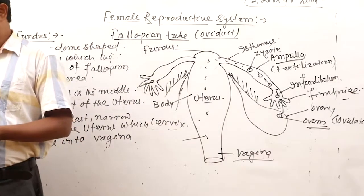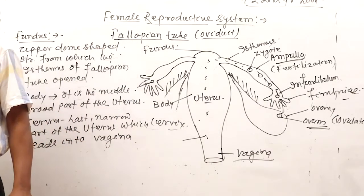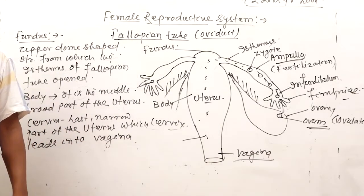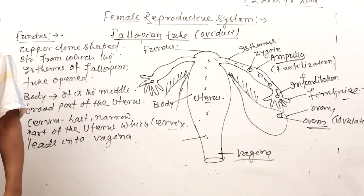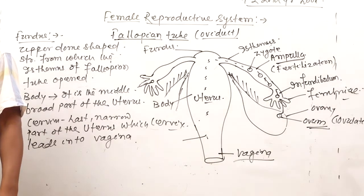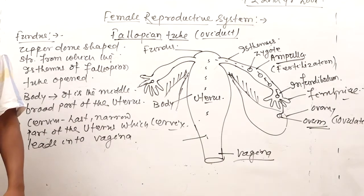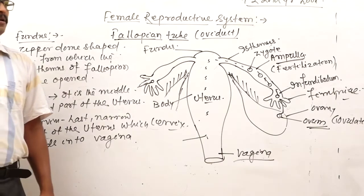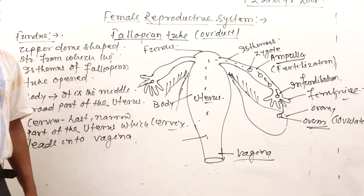The uterine wall is thick and consists of three layers: endometrium, myometrium, and perimetrium.